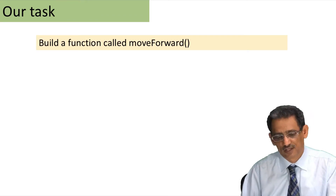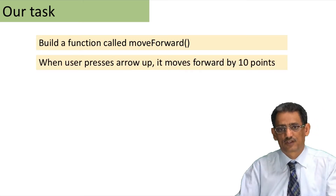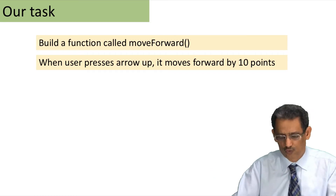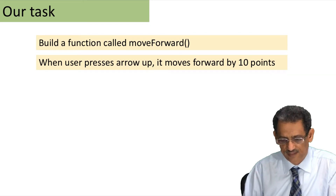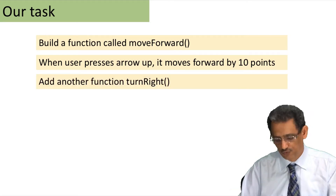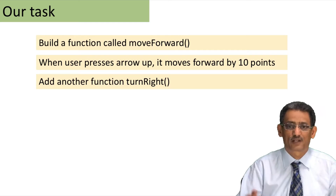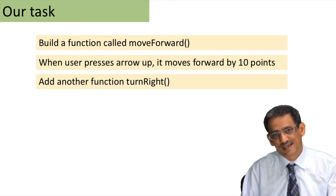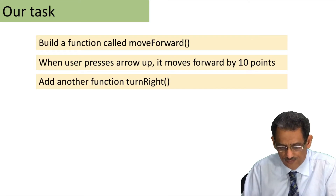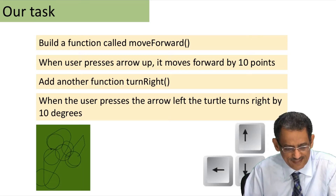We will be using functions to do that. Our task will be to create two functions. The first one will move forward — when you press the arrow up, it starts moving in the forward direction by 10 points every press, and if you hold your finger it will keep drawing 10 points. The other function will be called turn right, so if you press the right arrow it will turn the turtle to the right, and then you can press forward and continue drawing.